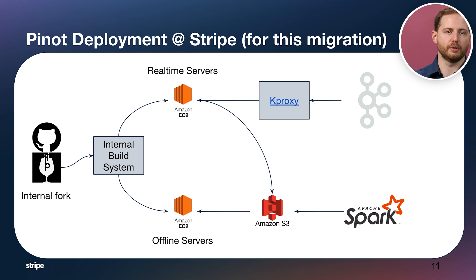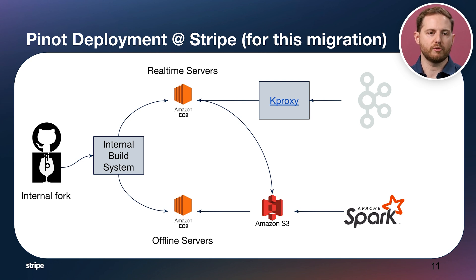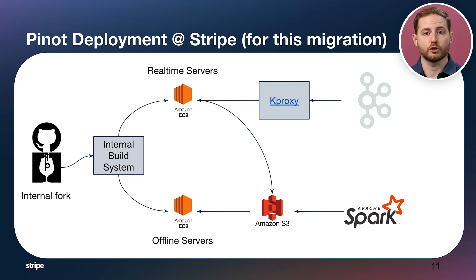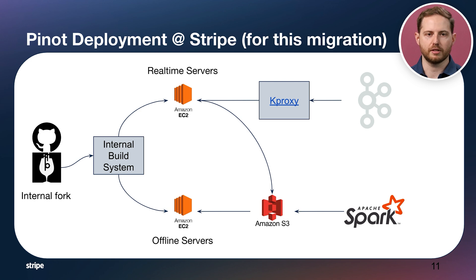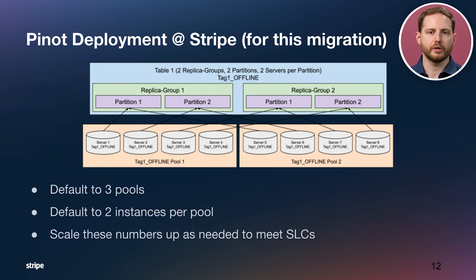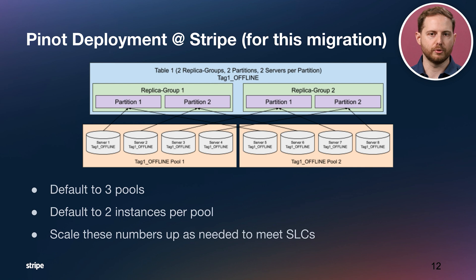To talk about how we deployed Pinot at Stripe: we maintain an internal fork very close to upstream master. Most changes we've made have been upstreamed or relate to our internal build system where we build Pinot from source and deploy it to EC2 instances across all components. Spark jobs generate our offline segments, we push them to S3, and the offline servers download them. Our real-time servers consume Kafka events from an internal proxy known as Kproxy. We also use the pool-based instance assignment strategy everywhere, starting with a default of three pools and two instances per pool, enabling fast rolling restarts and easy scaling.